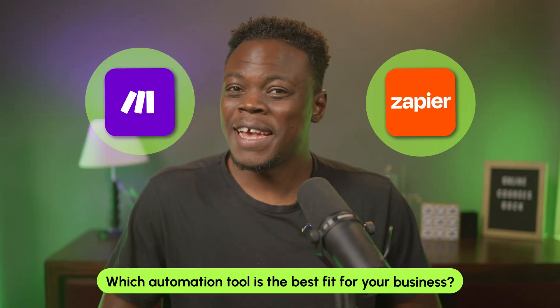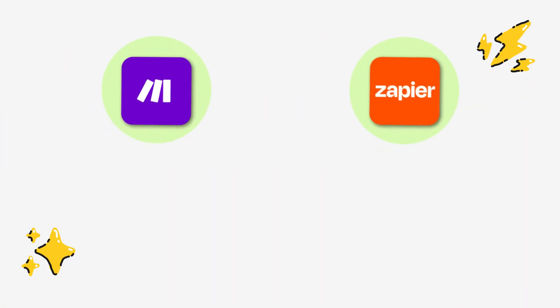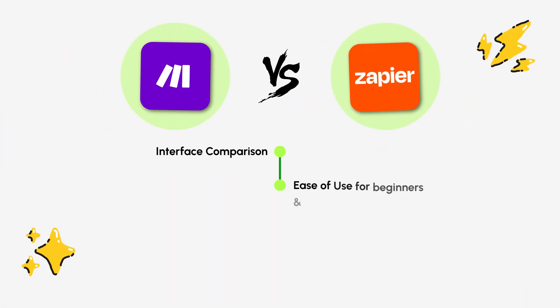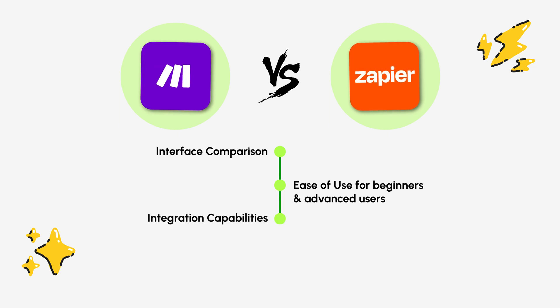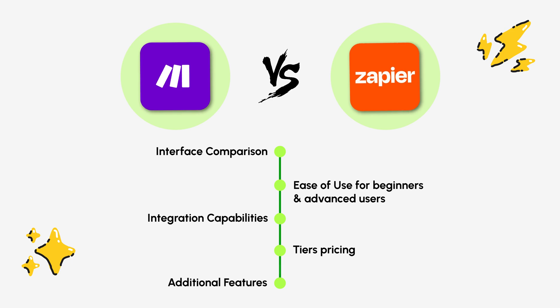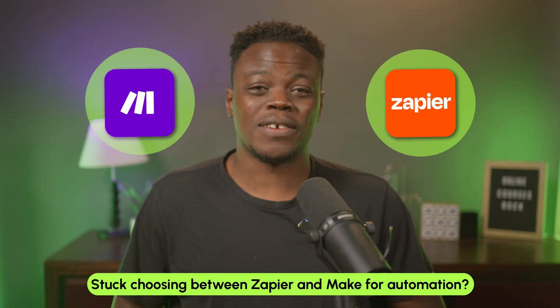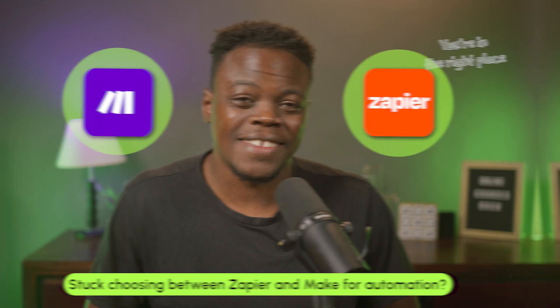In this video, we're comparing Make and Zapier to determine which automation tool is best fit for your business. We'll take a look at their interfaces, the ease of use for beginners and advanced users, the integration support, the pricing of their tiers, and we'll highlight any additional features that you should consider. So if you're feeling stuck choosing between Zapier and Make for automation, you're in the right place.